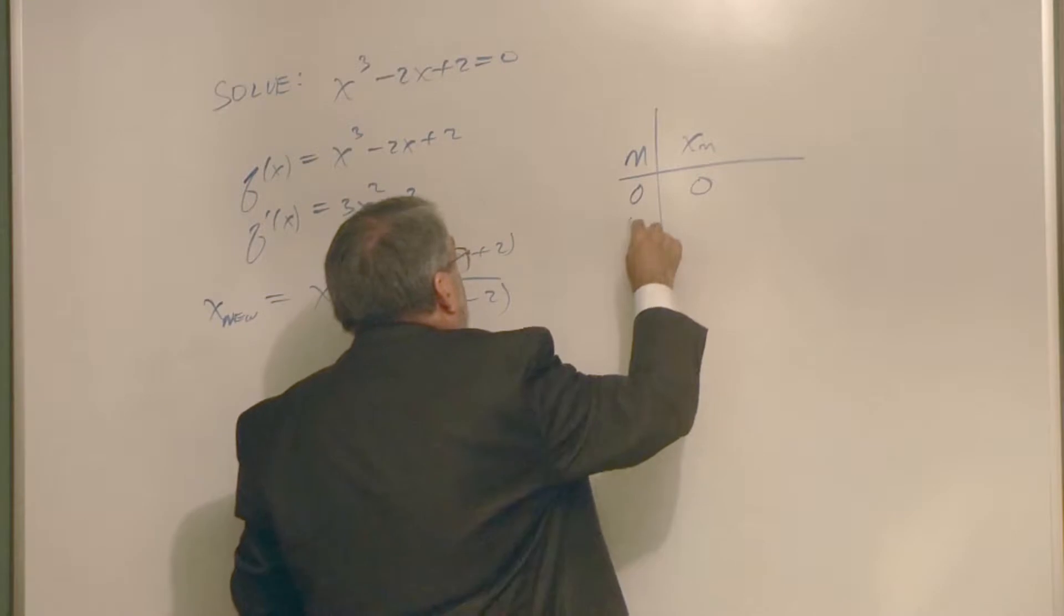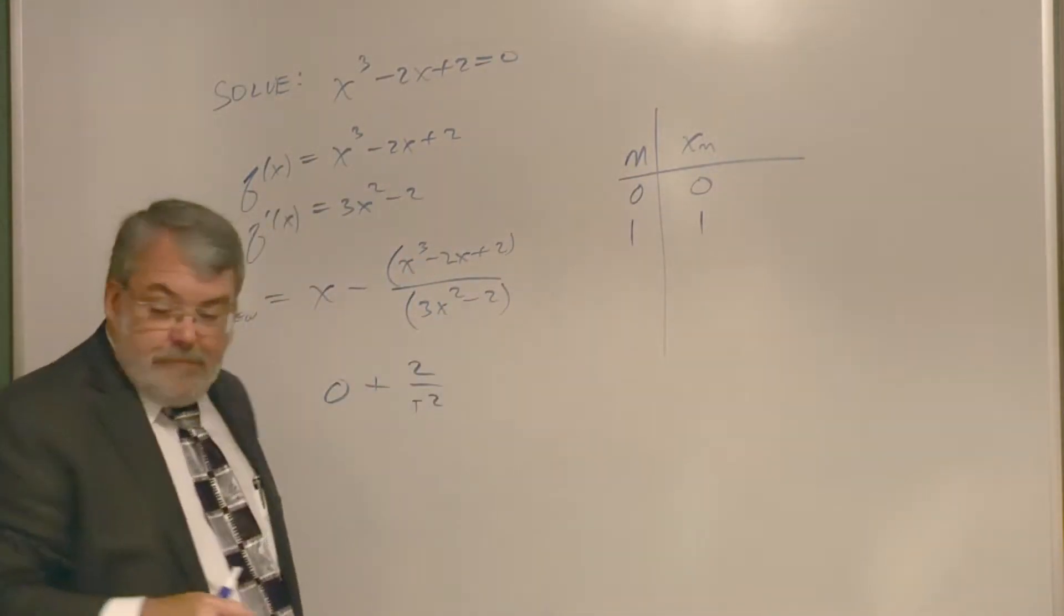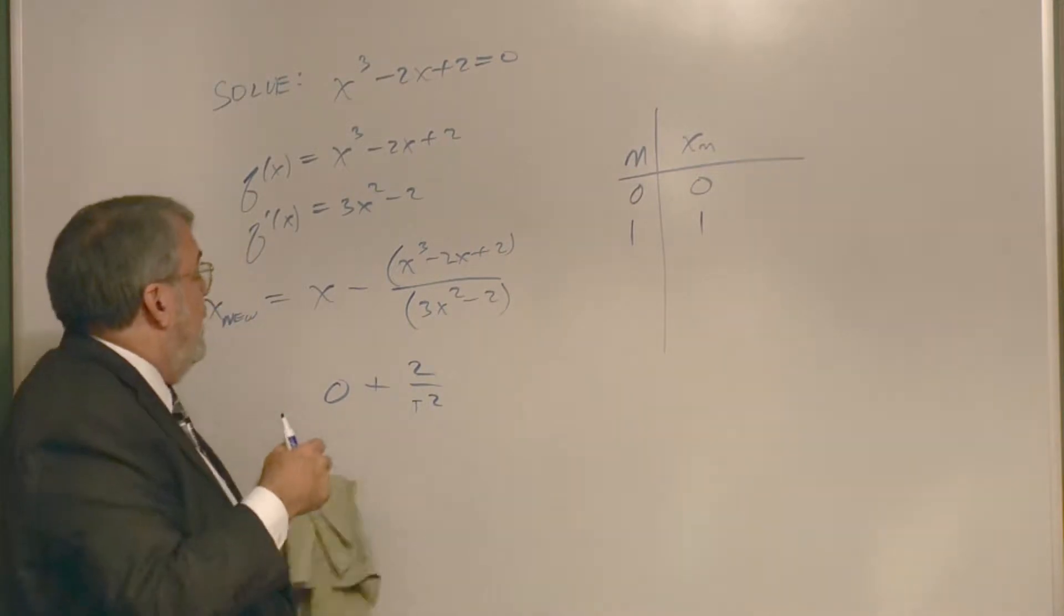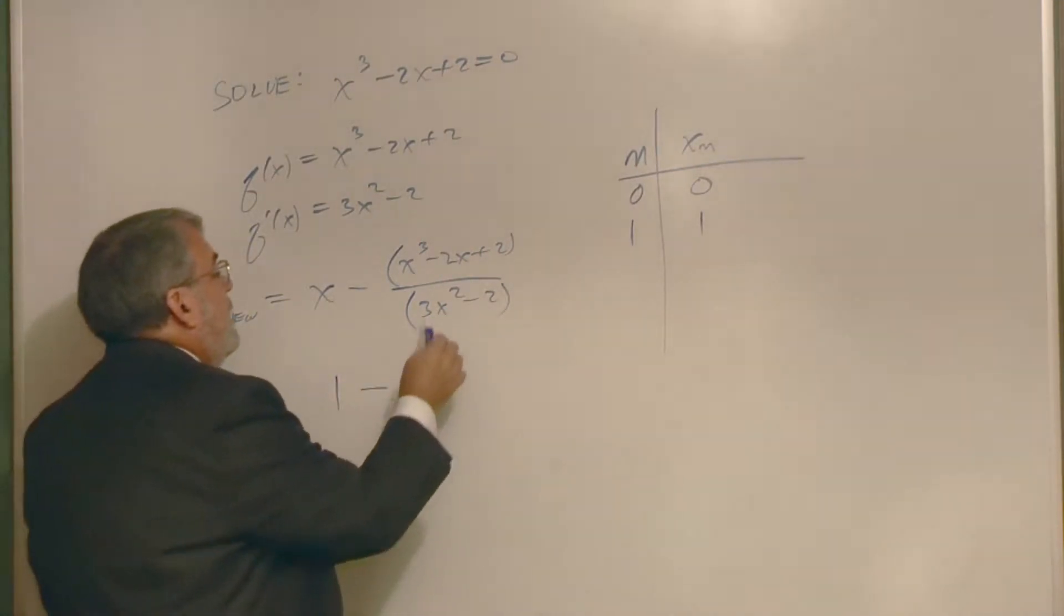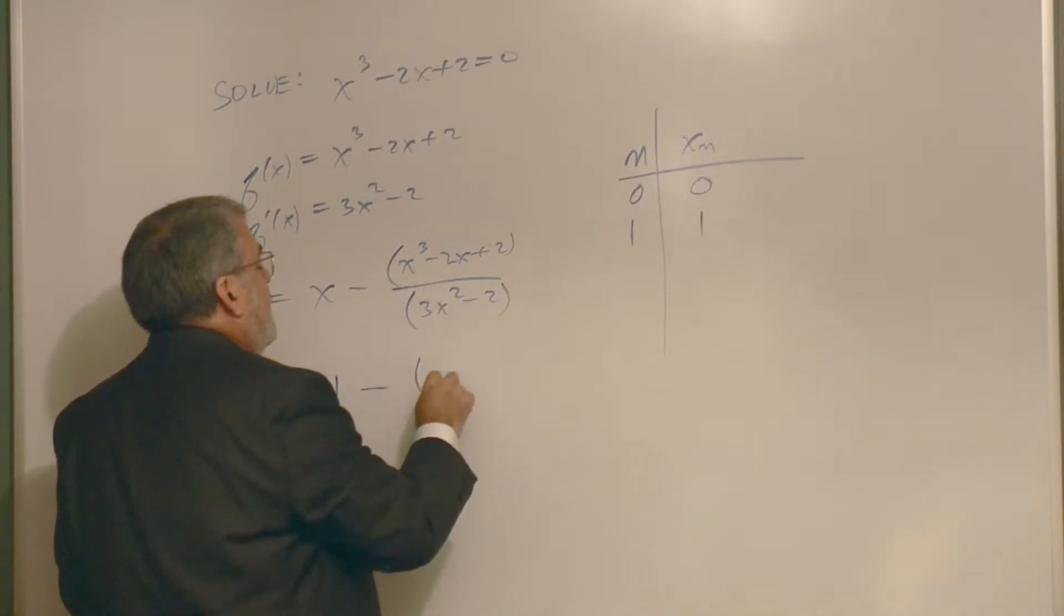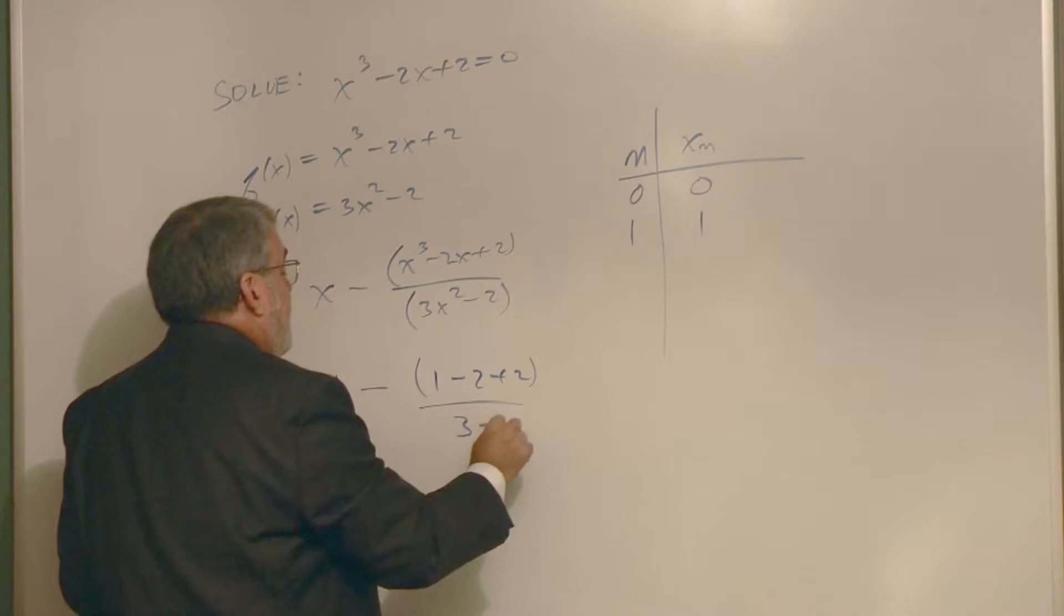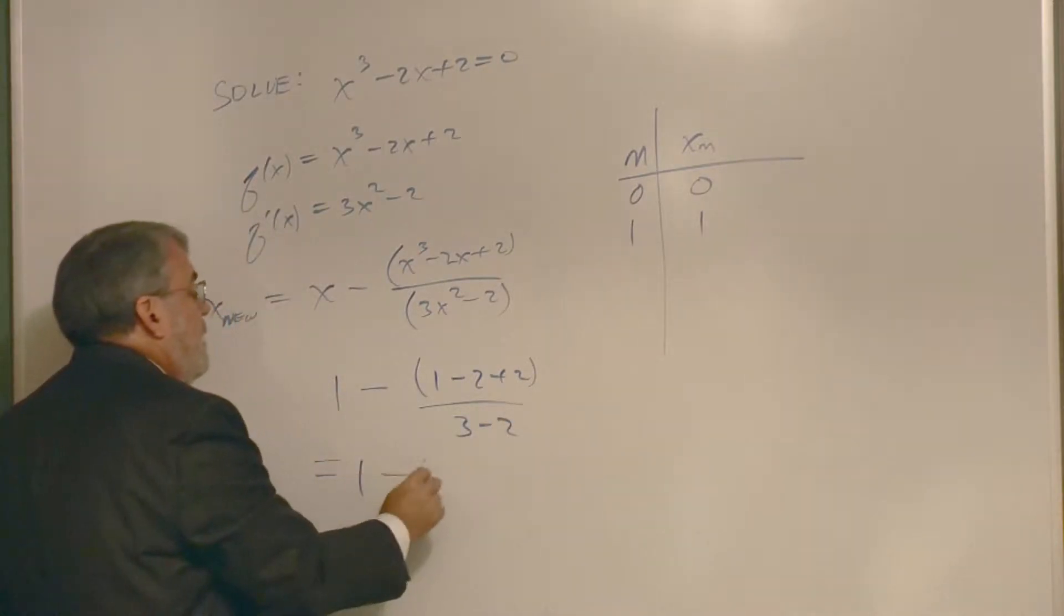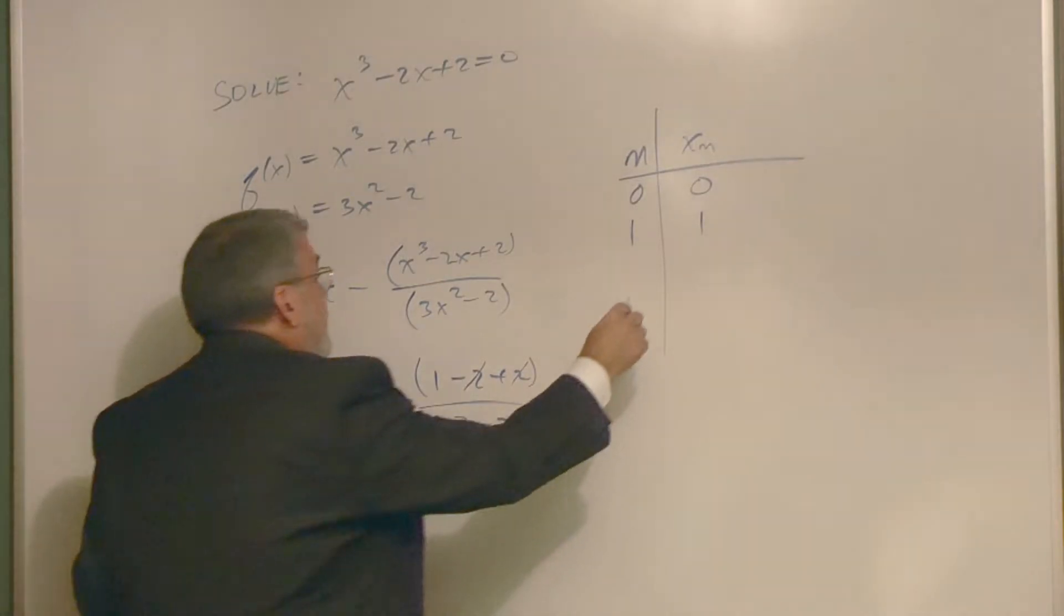If you plug in 0 you get 1. Now when you plug in 1, look what happens. If I plug in 1, it's 1 minus, so on top I've got 1 minus 2 plus 2 over 3 minus 2. That's 1 minus 1 over 1. 1 minus 1 is 0, I get 0.